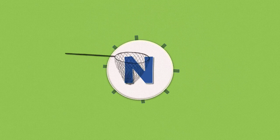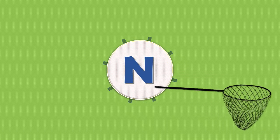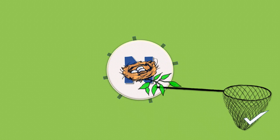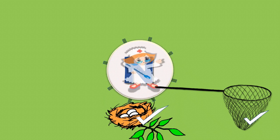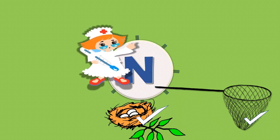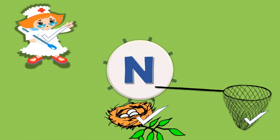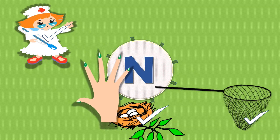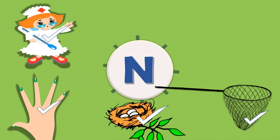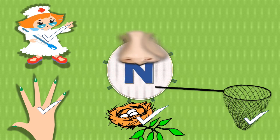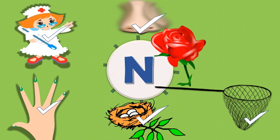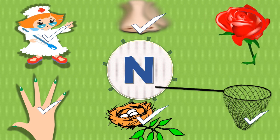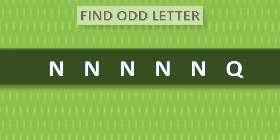N. N for net, correct, yes. N for nest, correct, yes. N for nurse, correct, yes. N for nails, correct, yes. N for nose, correct, yes. N for rose — no, it's wrong. Find odd letter.